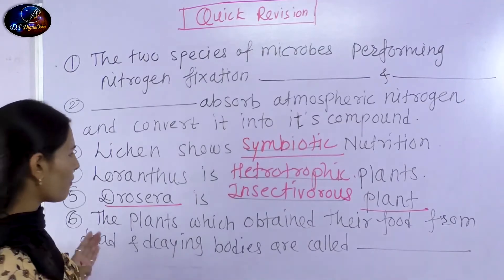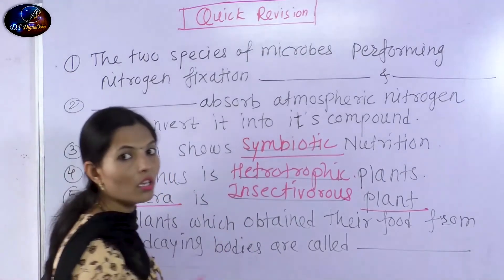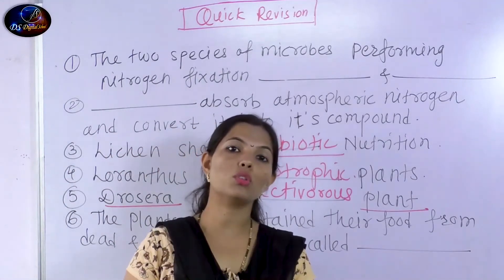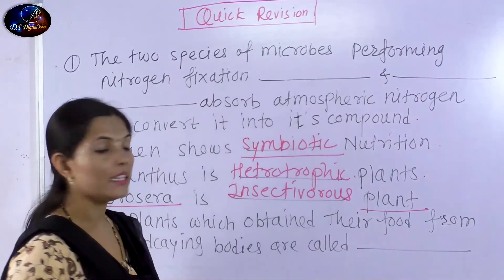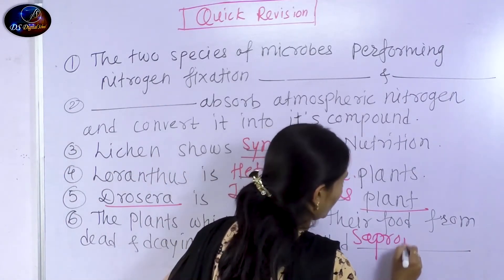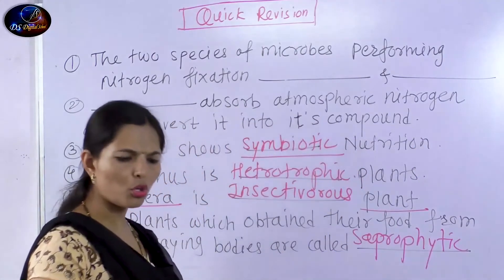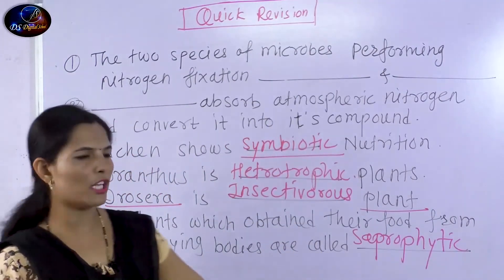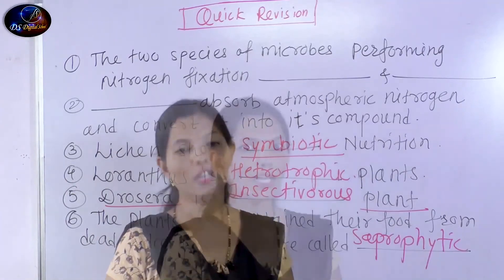The plants which obtain their food from dead and decaying bodies are called saprophytic plants. What do we call them? Saprophytic plants. These plants depend on dead and decaying matter for their nutrition.